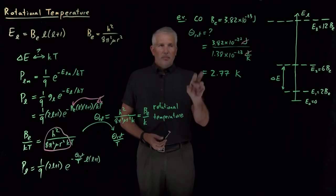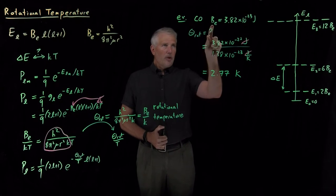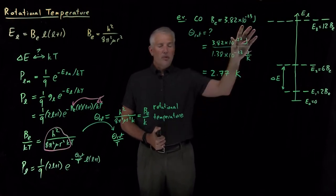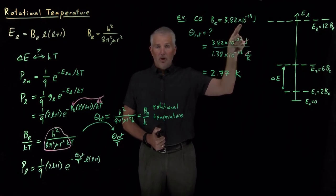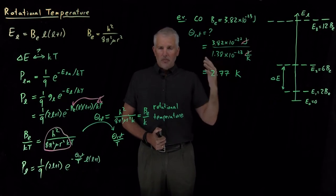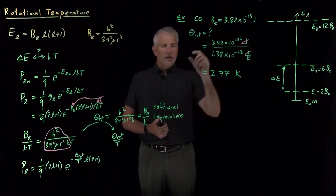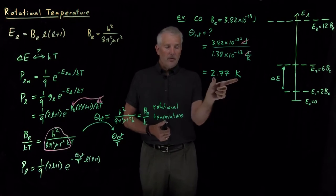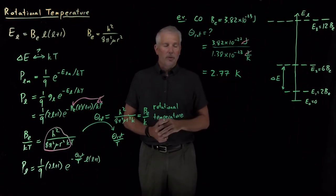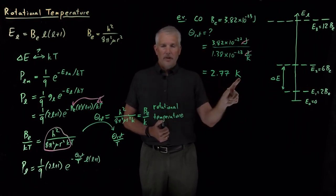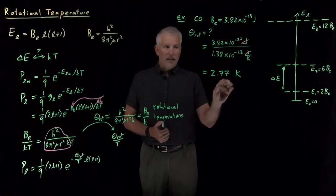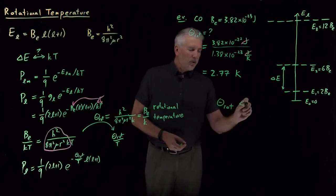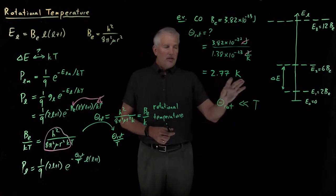This also illustrates why we prefer talking about the rotational temperature. When told B_e = 3.82×10⁻²³ joules, you don't get a good sense of scale — whether it's big or small compared to kT. But when told 2.77 K, you immediately understand: room temperature is around 300 K, so 2.77 K sounds very cold. You intuitively know this rotational temperature is quite small compared to temperatures you'd study in a chemistry class.